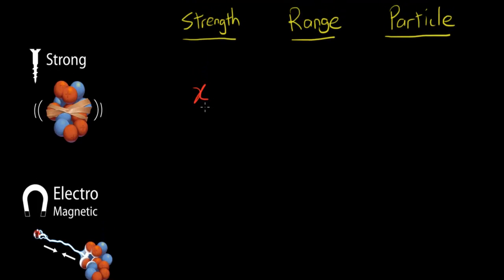The strong force is the strongest force. As this picture shows, it basically binds together protons and neutrons in the nucleus. If the strong force wasn't there, we know that protons are positively charged, so they should repel each other due to the electromagnetic force. Because like charges repel, the protons should repel from each other and the nucleus should not be stable at all. The strong force is what keeps the protons and neutrons bound together.